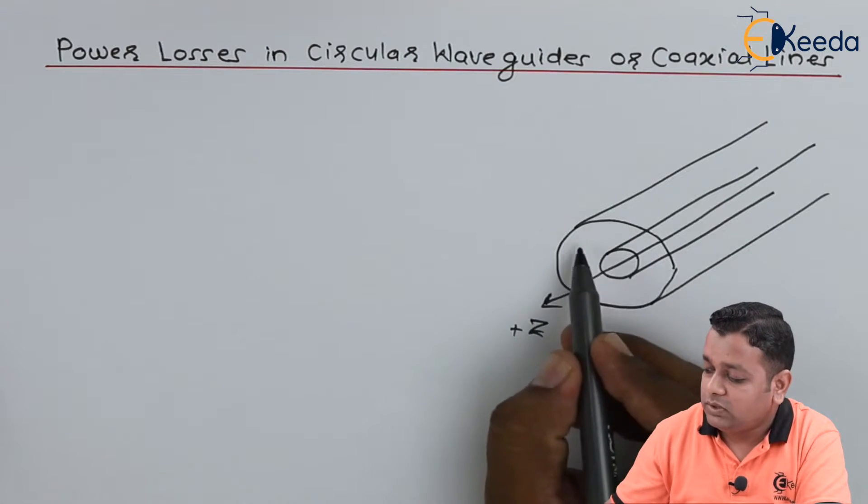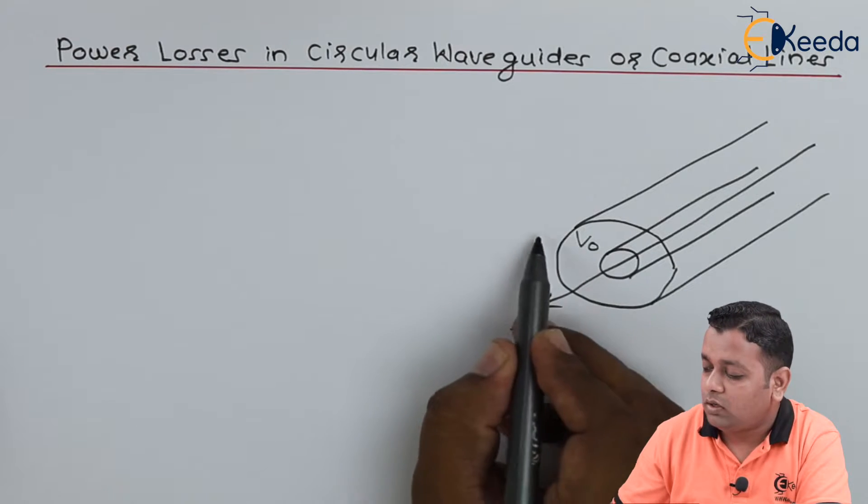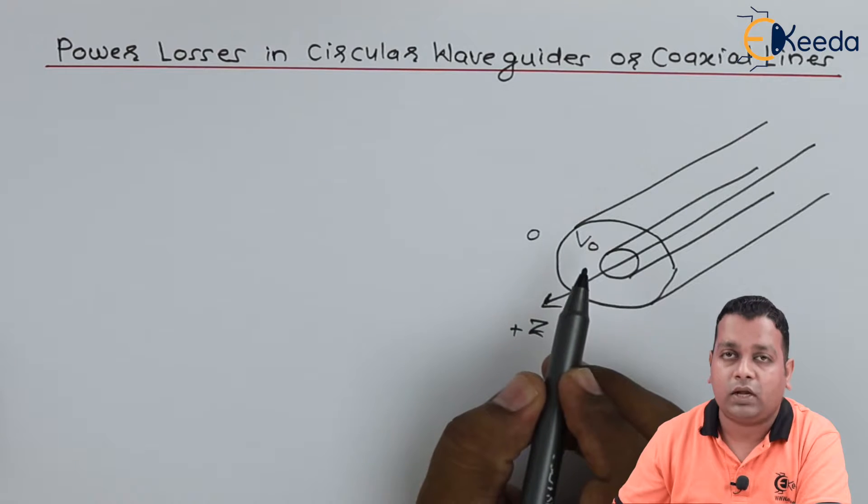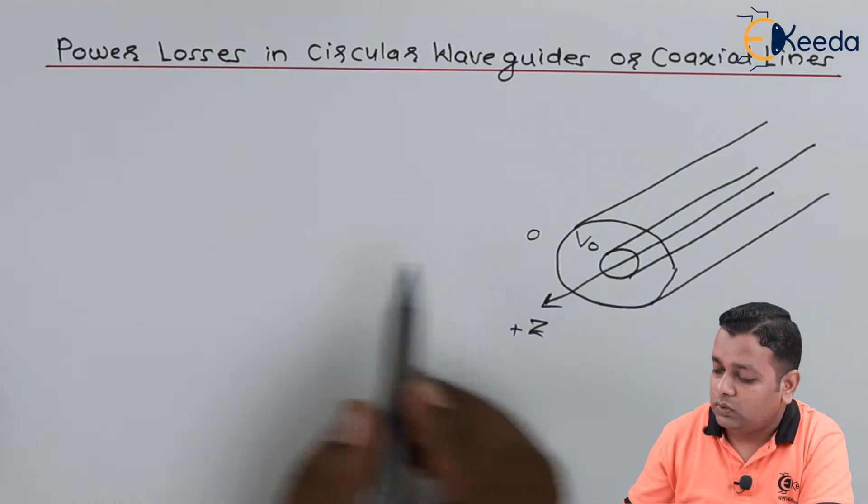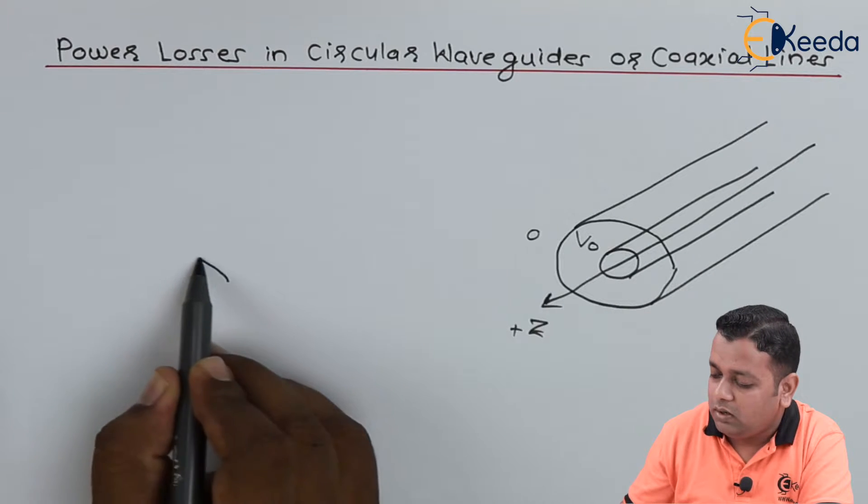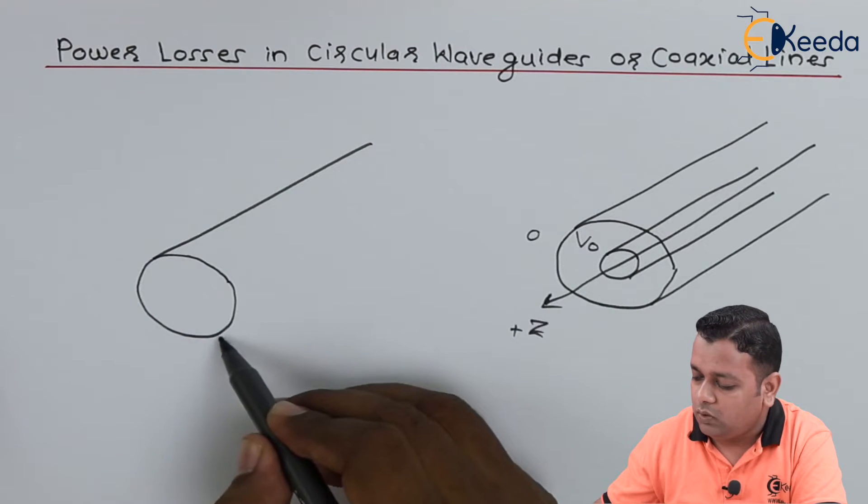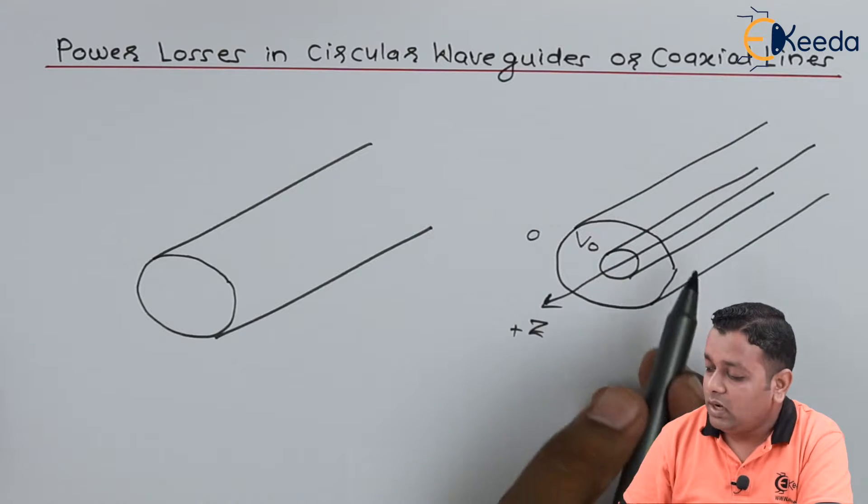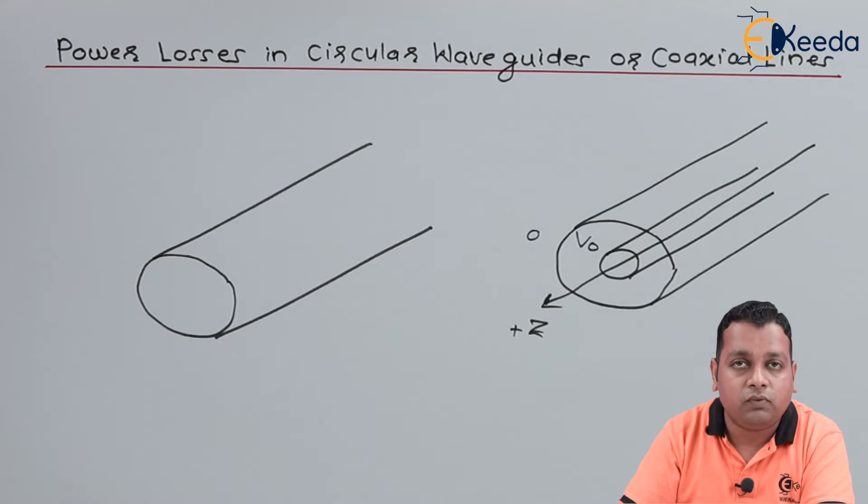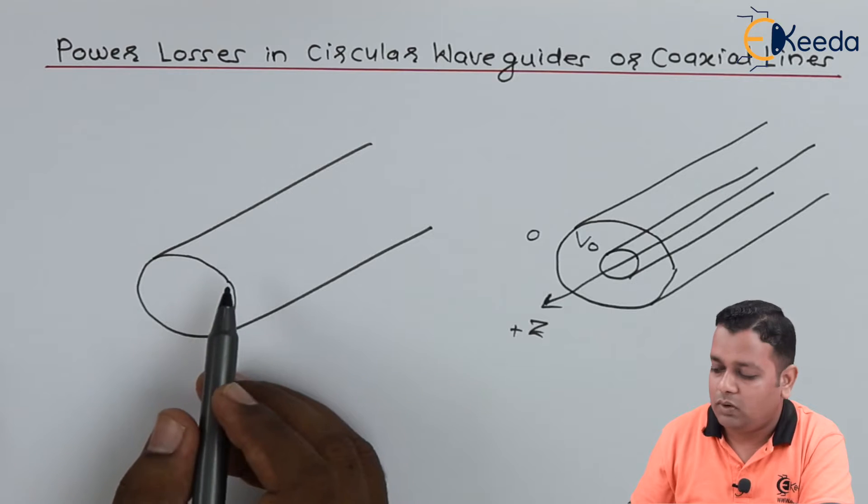So let us imagine this is the z-axis and towards the positive z direction there is microwave propagation. For coaxial transmission line we have the central conductor as more potential value whereas the outer conductor is at zero potential. Now when we don't have the central conductor, that time only one conductive transmission line, single conductor transmission line we call, it is the circular waveguide. Inside the coaxial line the transmission flows with the help of voltage and current waves, but inside the circular waveguide,